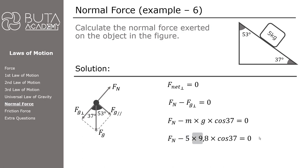Since Fg perpendicular is adjacent to 37 degrees, its value can be calculated as the force of gravity — mass times gravitational acceleration — multiplied by cosine 37. The mass of the object is 5 kilograms and gravitational acceleration is 9.8. The magnitude of the normal force exerted on this object is 39.13 Newtons. In this video we have learned how to calculate the normal force for three more cases.